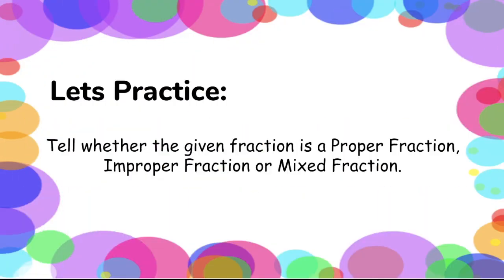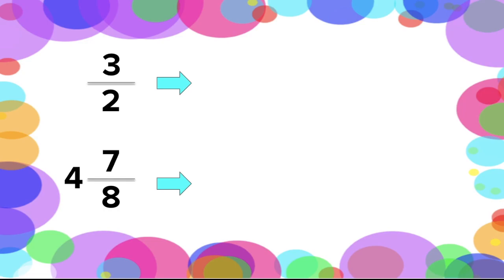Let's have practice. Tell whether the given fraction is a proper fraction, improper fraction, or mixed fraction. For our first item, the given is 3 over 2. Let's examine the numerator — is it greater or bigger than our denominator? Obviously, 3 is bigger than 2, meaning this is an improper fraction.